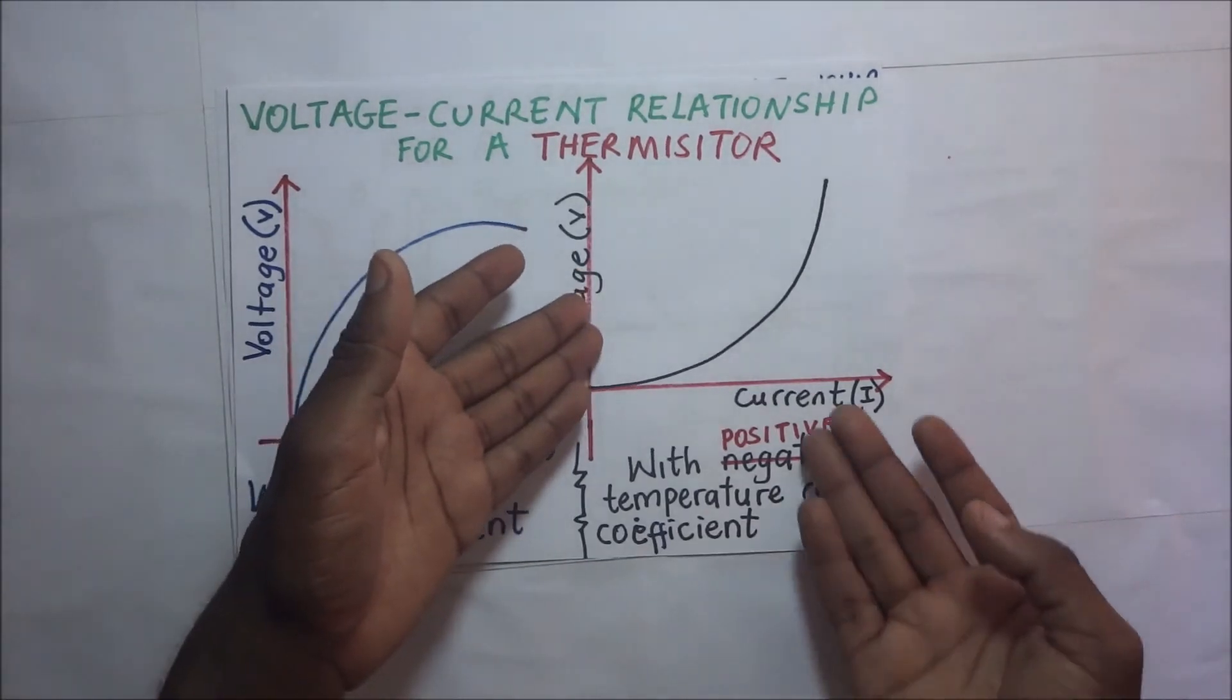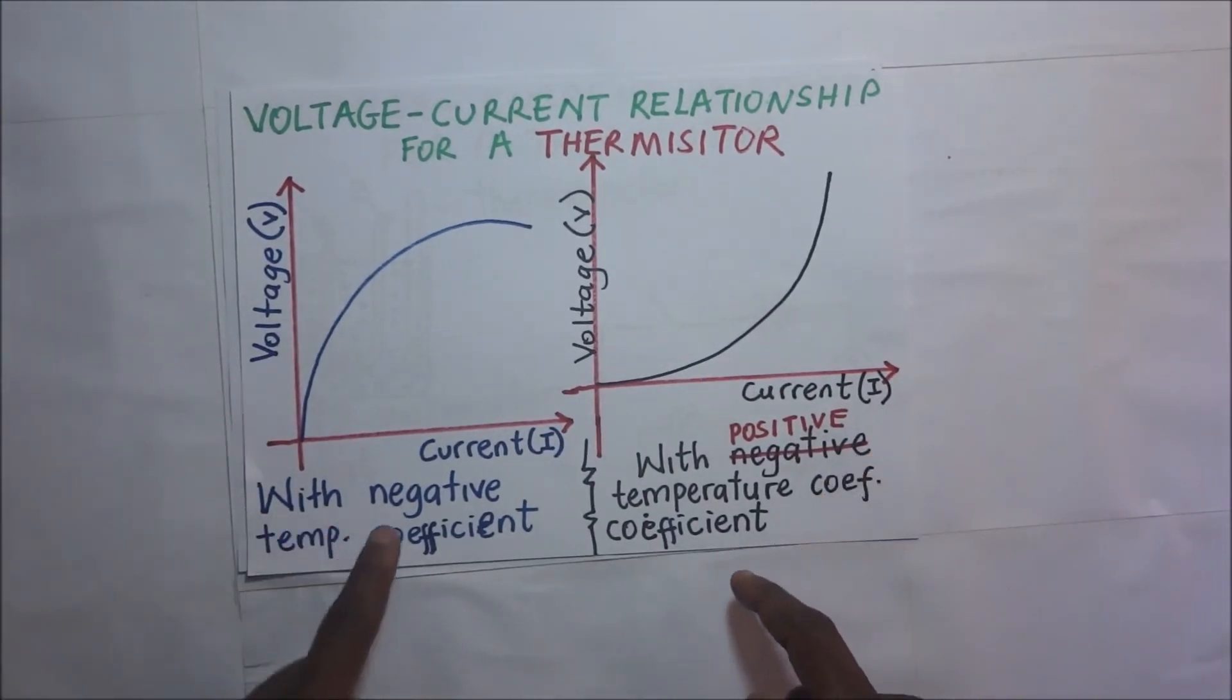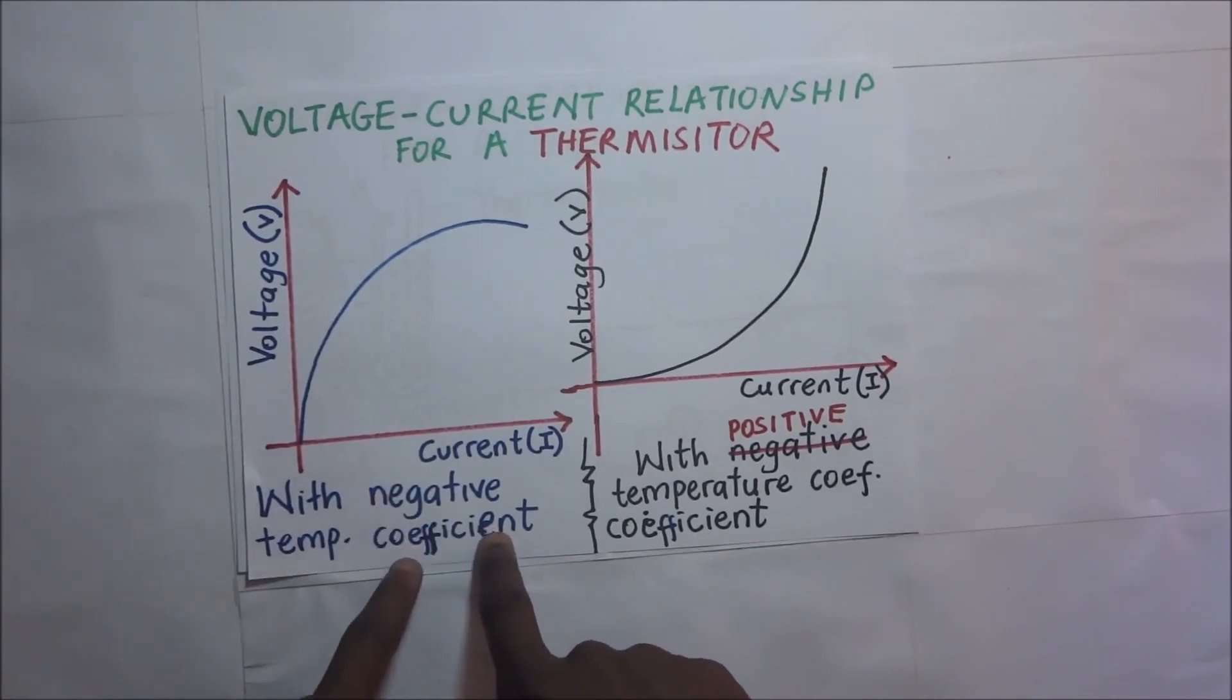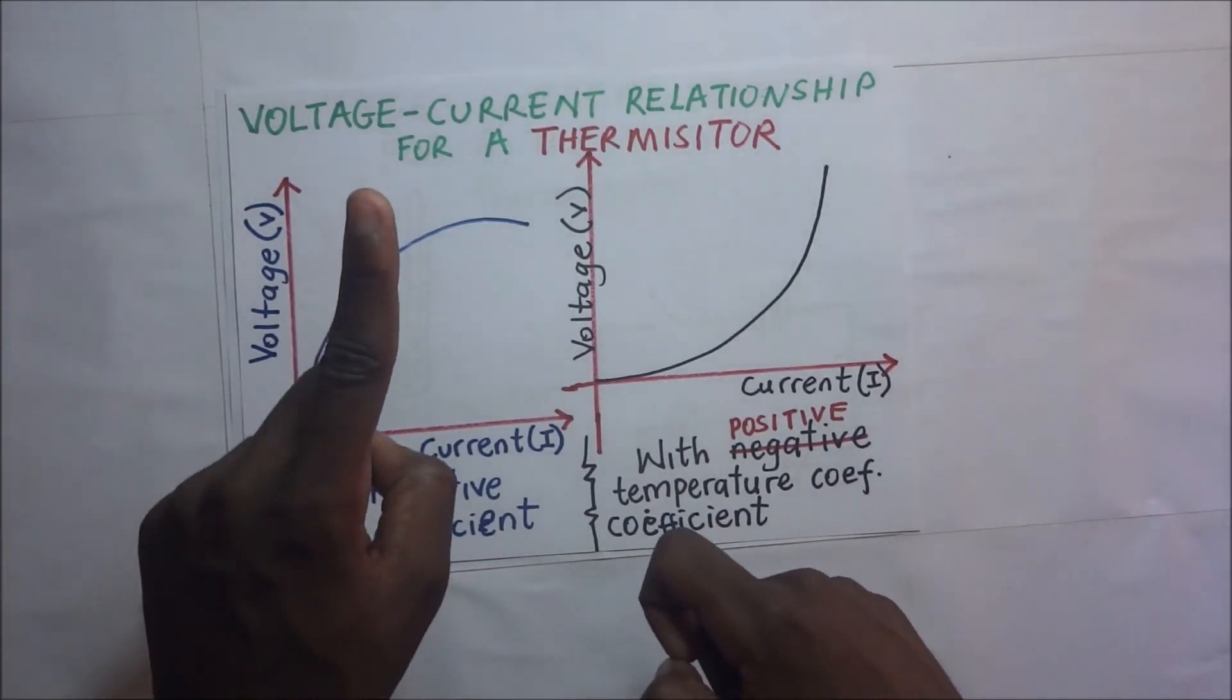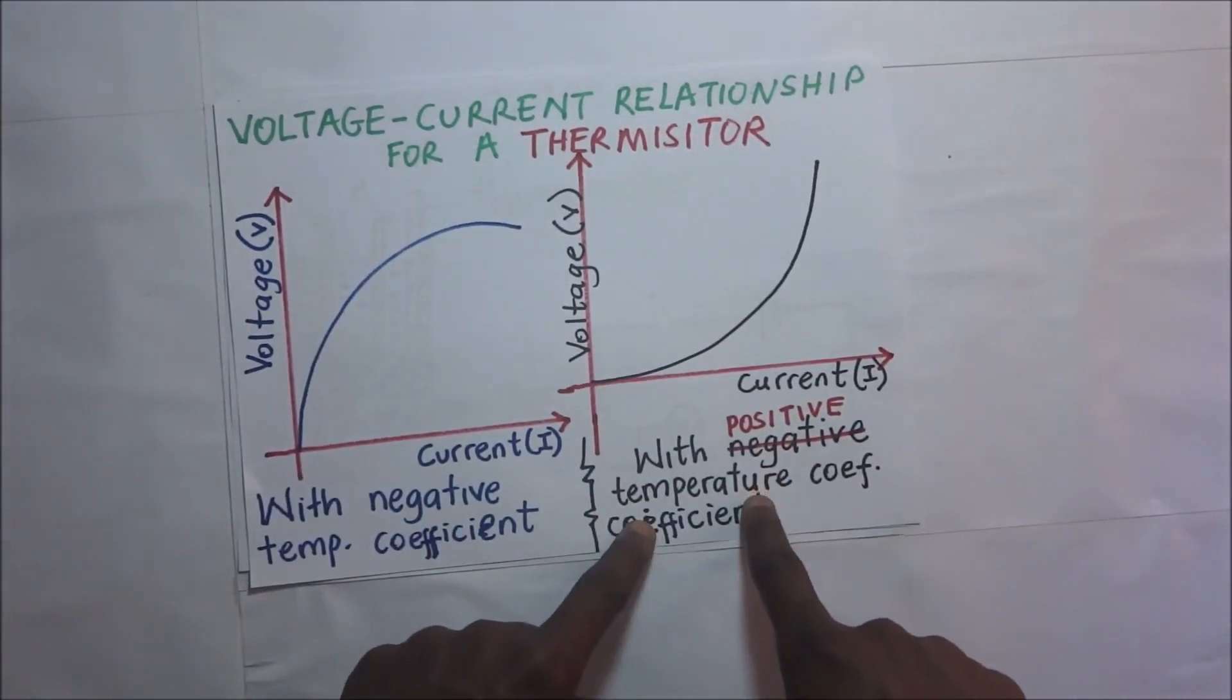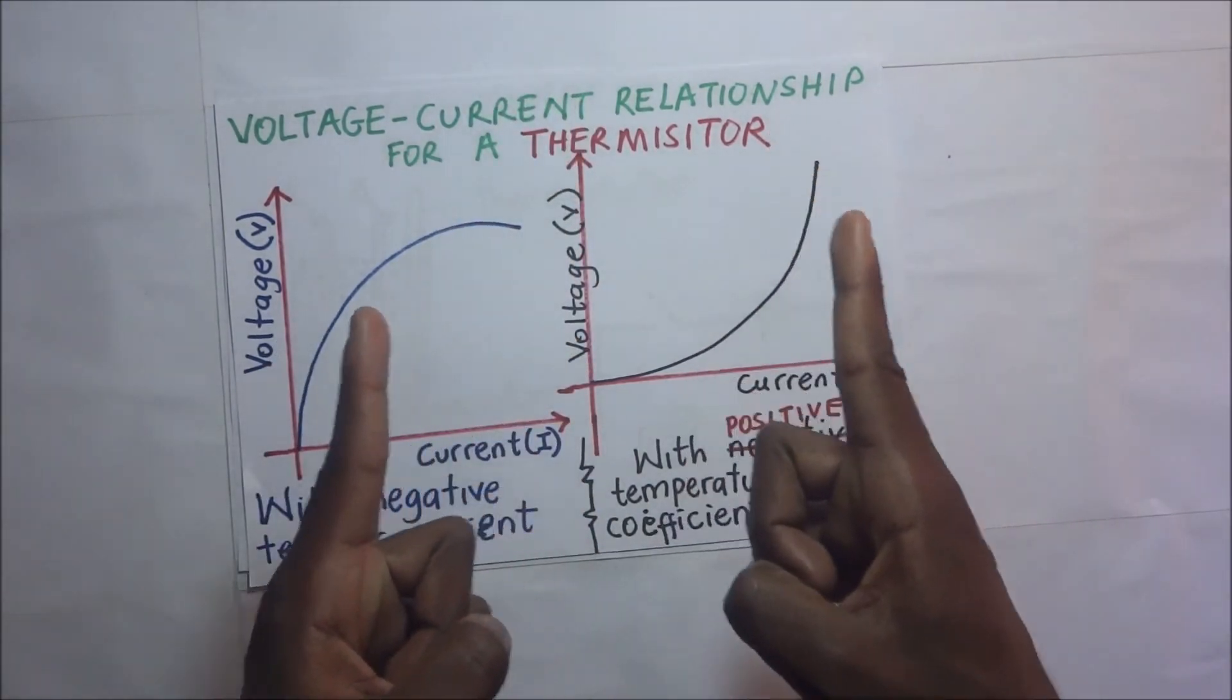When this thermistor is having a negative temperature coefficient of resistance, it simply means that as the temperature of the thermistor increases, the resistance decreases. When it's having a positive temperature coefficient of resistance, it simply means that as its temperature increases, the resistance also increases.